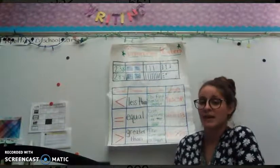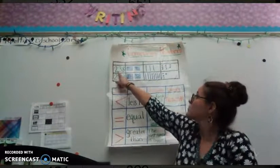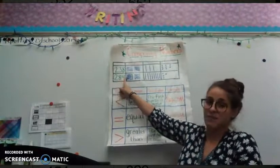So when I'm comparing two numbers, first I should read the numbers. 238, 284.